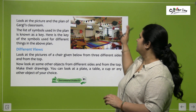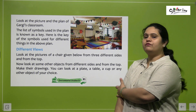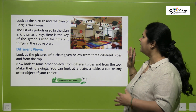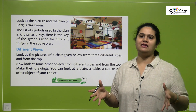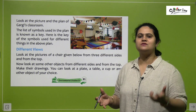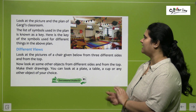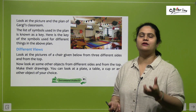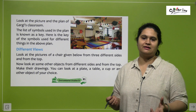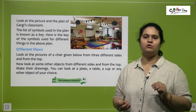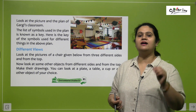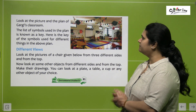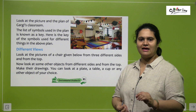Now this is the picture and the plan of Gagi's classroom. Yeh Gagi ka classroom hai — isko bhi agar aapko plan ki form mein represent karna hai, so you use certain symbols and represent that. Aur list of symbols hoti hai, jinhein hum plan mein represent karte hain. Unh symbols ki list ko kya kehte hain? We call it a key. So a key is a list of symbols used in the plan.